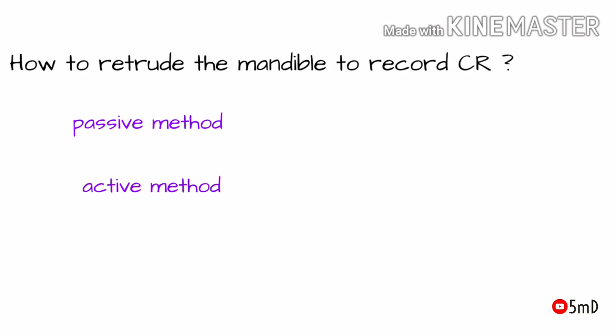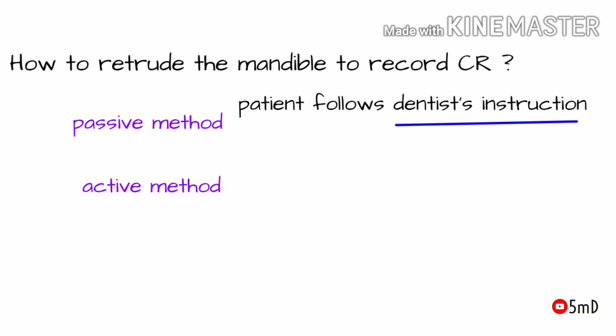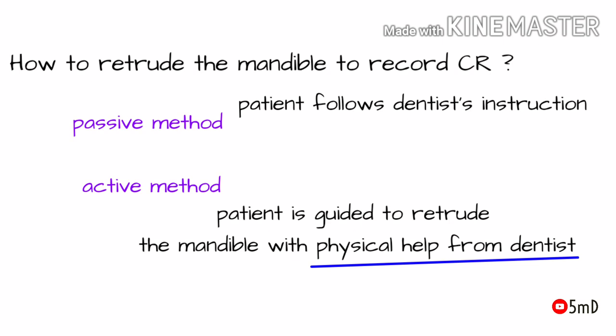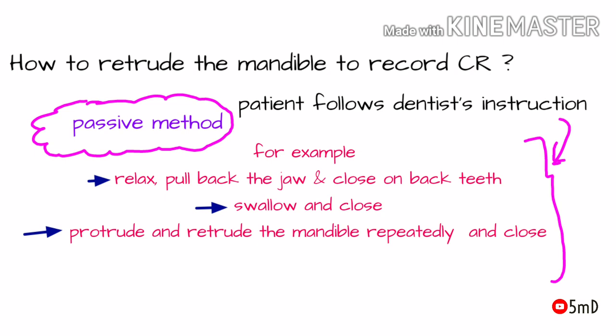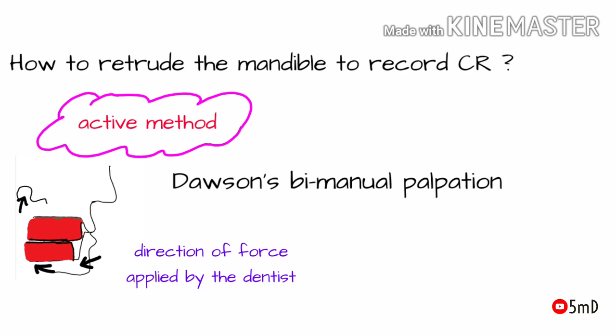To record CR, the mandible must be recruited first. This can be done by either passive methods or active methods. In the passive method, the patient himself is guided to push the mandible backwards, whereas in the active method, the doctor guides the patient and pushes the mandible with his fingers. Using the passive method, the patient is instructed to relax and pull back the jaw and close on back teeth, swallow and close, or protrude and retract the mandible repeatedly. The patient can also tilt the head backwards while performing these exercises.